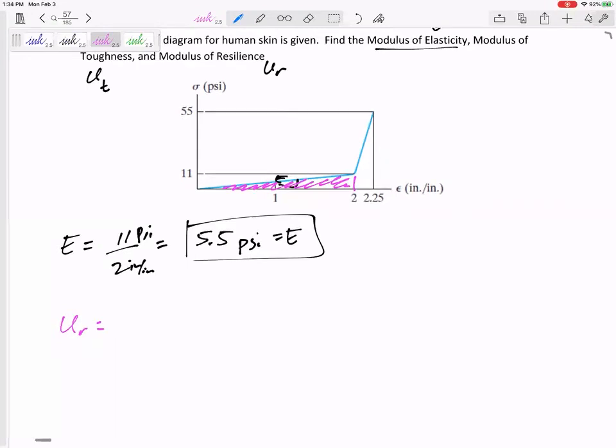U of resilience is the area under there, and it's a triangle. Area of a triangle: one half base times height - 11 psi. So that would be 11 psi - that is Ur.